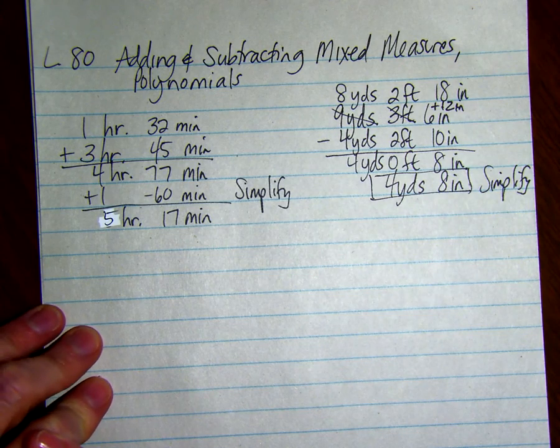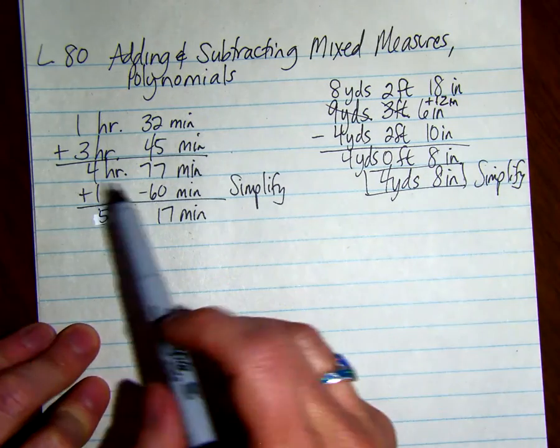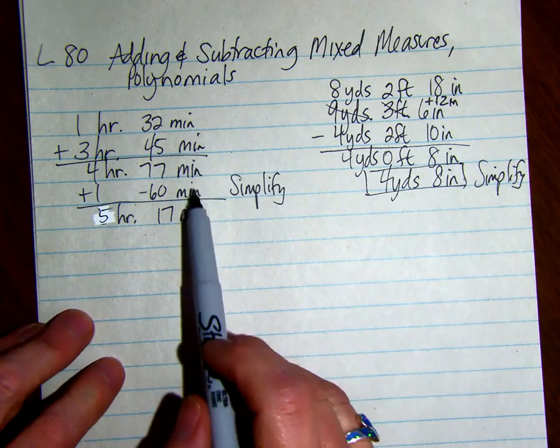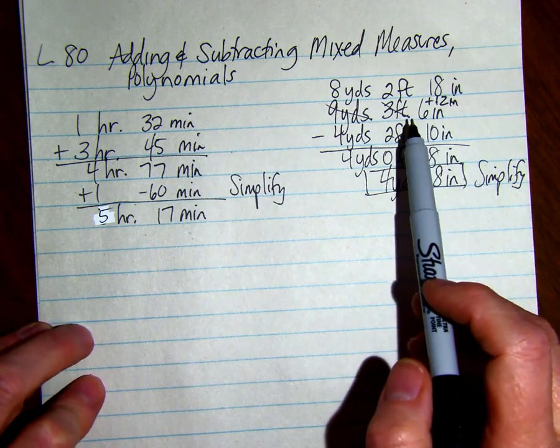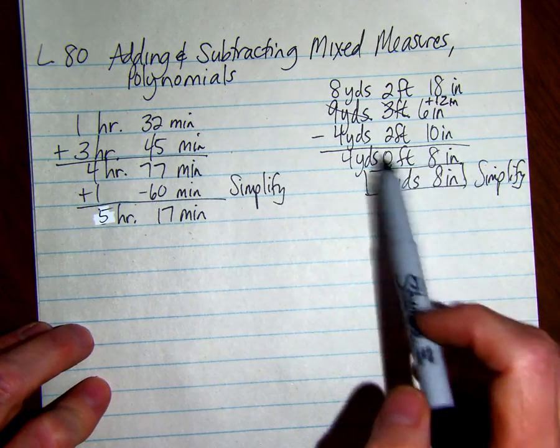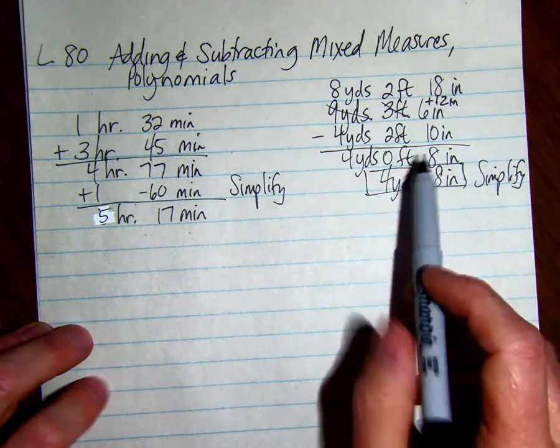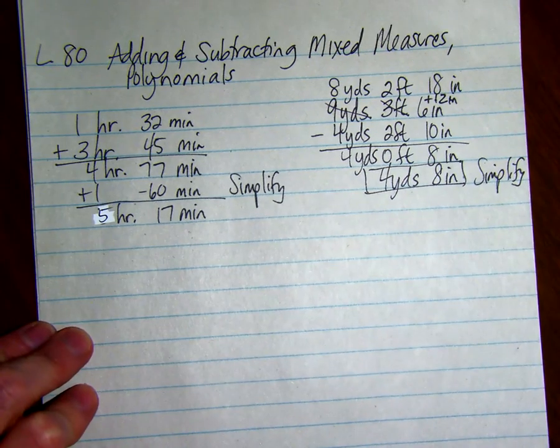That's adding and subtracting mixed measures. Always remember when you're adding, you simplify after you add. And when you're subtracting, you have to do all this borrowing, and then you're usually done. Just simplify if you take one measure out.